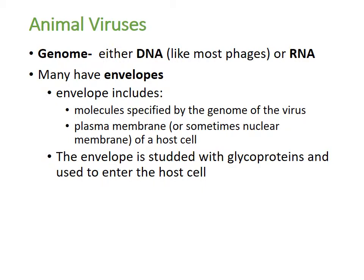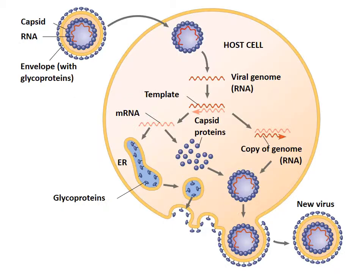Animal viruses can have a genome of either DNA, like most phages, or RNA. They can also have envelopes. The envelope includes molecules from the virus and molecules from either the plasma membrane or the nuclear membrane of the host cell. The envelope is studded with glycoproteins and is used to enter the host cell. The picture shows viral RNA, the capsid, and the envelope with glycoprotein spikes.